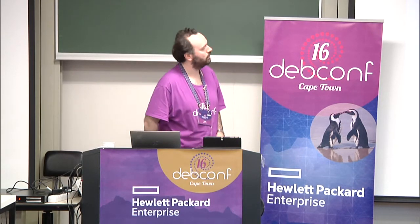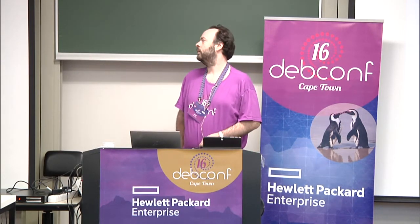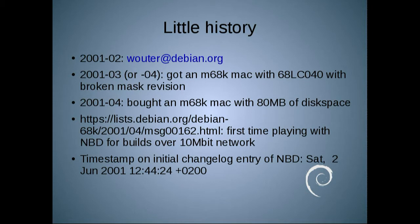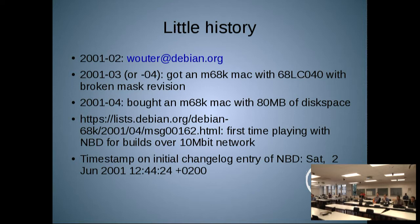A little bit of history. I became a Debian developer in February of 2001. At some point in March or April of that same year, a friend gave me an old 68K Macintosh, which had a broken LC040 processor, which meant that if you tried to do something with the FPU, it would segfault or bus error on you very quickly. So I couldn't really use it. So the next month I bought another 68K Mac, which came with a hard disk of a whopping 80 megabytes. 80 megabytes is not much, not even in those days.